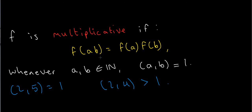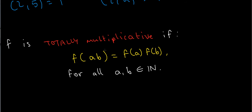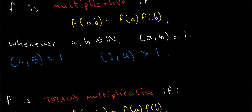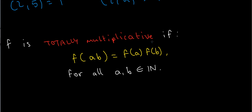There's actually a stronger condition: we say a function is totally multiplicative if f(ab) equals f(a) times f(b) for all natural numbers a and b — that is, the same definition but without the coprime condition. Obviously, if a function is totally multiplicative then it's also multiplicative, but it's not necessarily true the other way around.